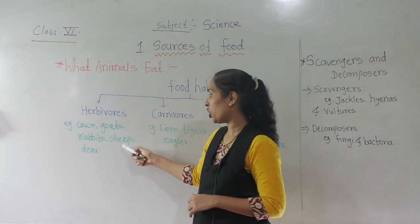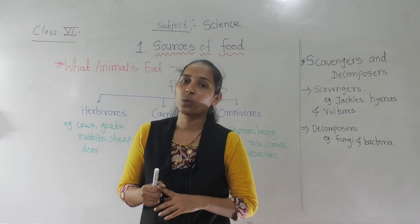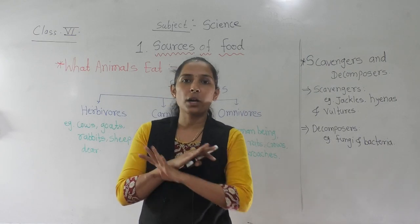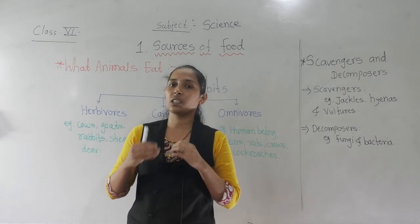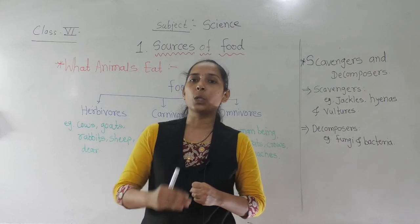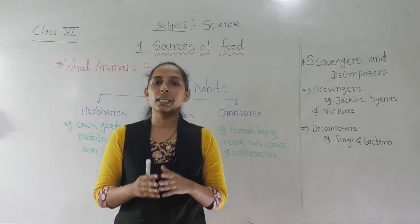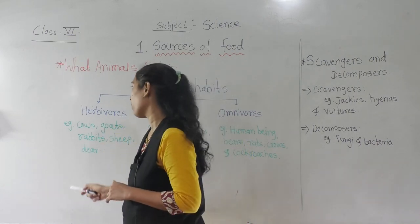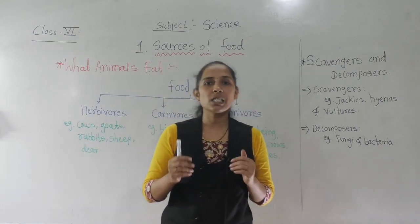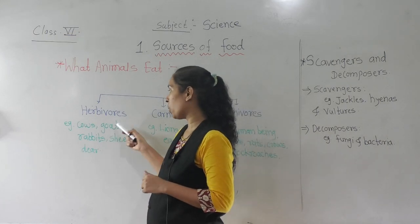goats, rabbits, sheep, deer, zebra, giraffe — all these animals eat only plants. They do not eat anything other than green plants or green grass. Animals that eat plants or plant products are called herbivores. Examples are cows, goat, rabbit, sheep, and deer.